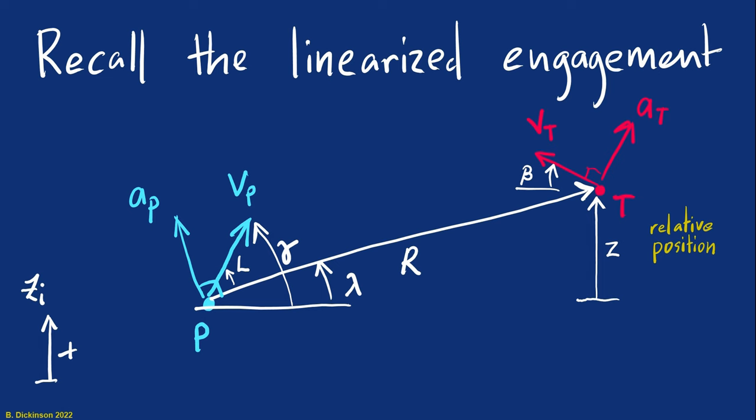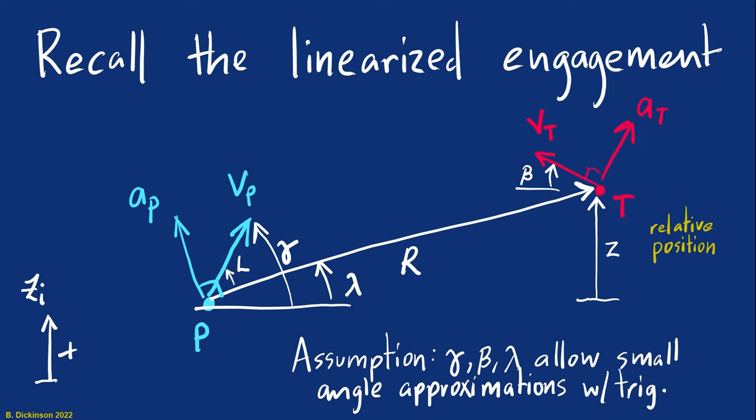For a linearized engagement, the flight path angle, the heading angle, and the line of sight angle are all assumed to be small enough so that trigonometry follows the small angle approximation. Essentially, we're in a near head-on collision when we assume this linearized engagement.